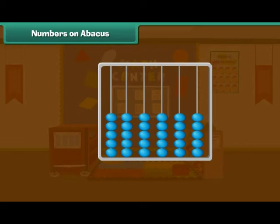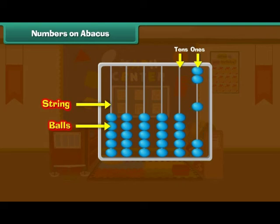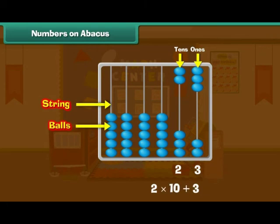Numbers on abacus. We can use an abacus for counting. It has many strings, and each string has many balls. We use the rightmost string to count ones, and the next string to count tens. This abacus has three balls in the ones string and two balls in the tens string, so the number is 23.